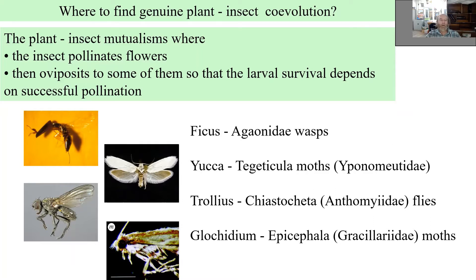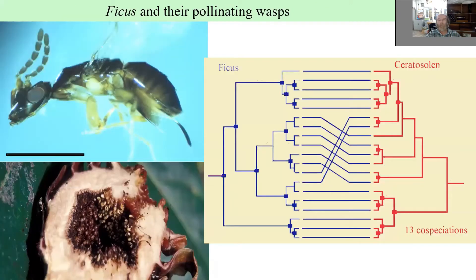If pollination is not successful, there will be no further development of that flower, and all the progeny of the mistakenly pollinating insect will die. This is a strong mechanism keeping pollinators specialized, creating a very close relationship between host plant and herbivore-pollinator species. These systems are not very common — the most famous are between ficus fig trees and their pollinating wasps, and also yucca and small moths.